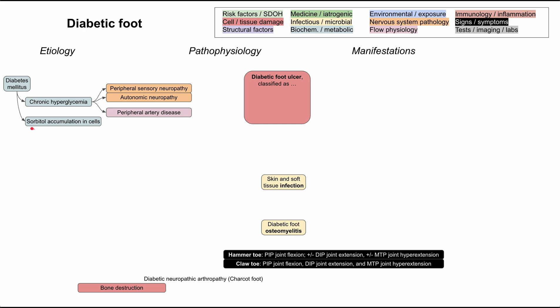In addition, diabetes leads to sorbitol accumulation in the cells, and this leads to microvascular changes — thickening of the medial layer of your vasculature. So that can lead to narrowing of your blood vessel lumens because of sorbitol accumulation. These are the etiologies that are going to lead to ulcers.